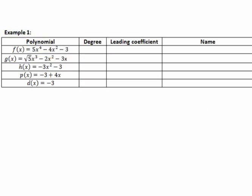Here are some polynomials. Let's first look at their degree. The degree is defined by the leading exponent. The first one is a polynomial of degree 4. The a value — the number in front of that highest exponent — is the leading coefficient, which would be 5. This polynomial is degree 4. Because it has 3 terms, we'd call it a trinomial. Because the degree is greater than 4, we'd just call it a polynomial.